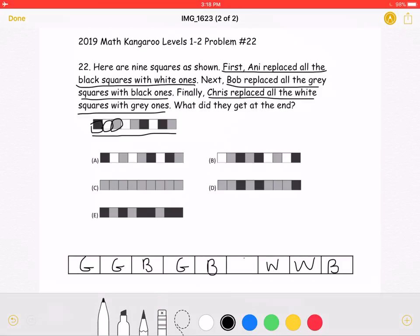So if we keep doing this, we should get our answer of gray, gray, black, gray, black, gray, gray, gray, black. And if we look at the answer choices, this appears to be answer choice D.